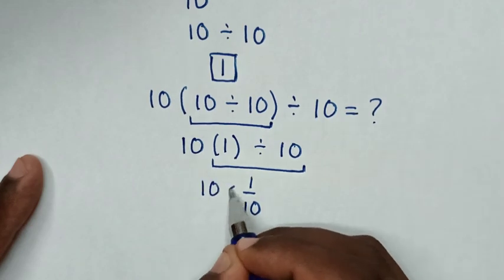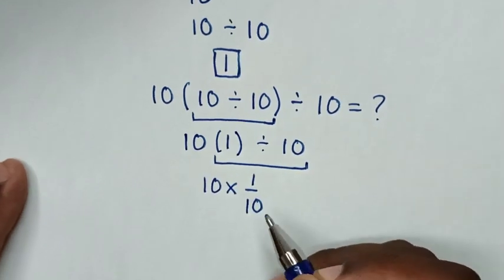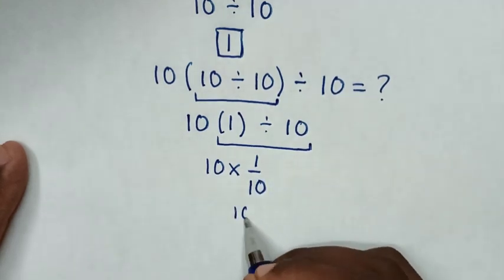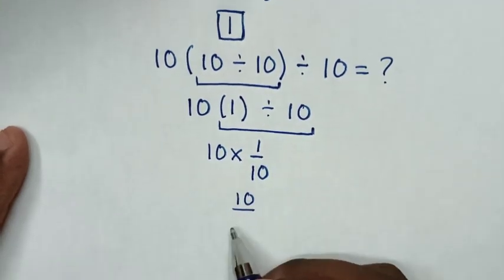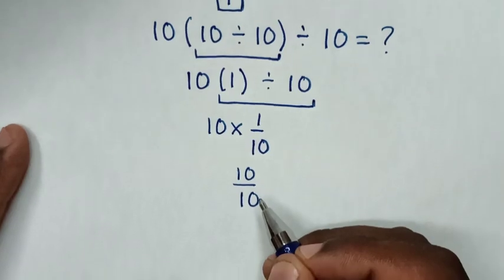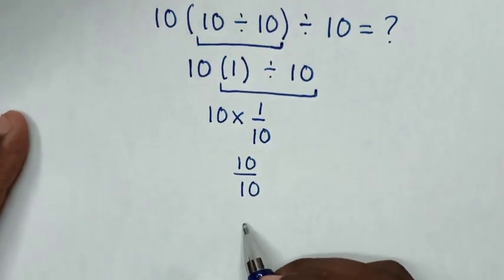So 10 times 1 over 10. Then this times this is 10 over this 10. So 10 over 10 is 1.